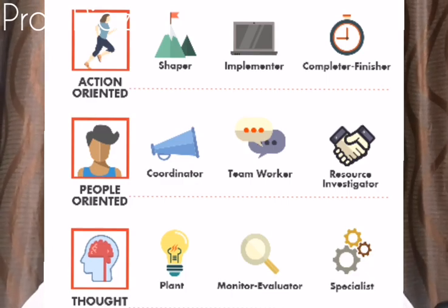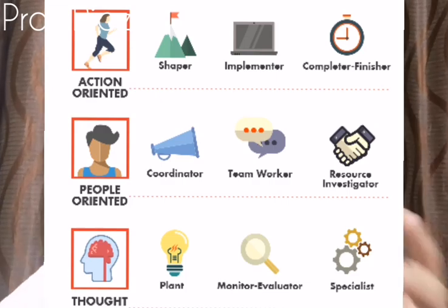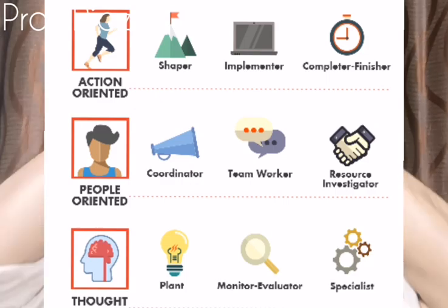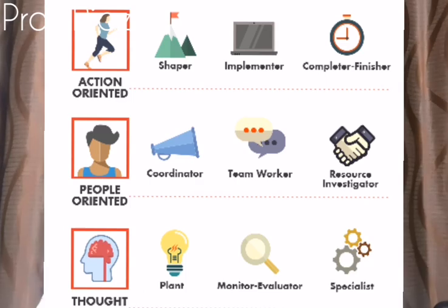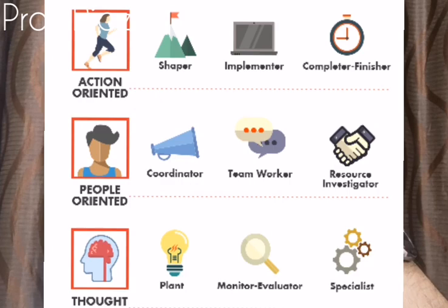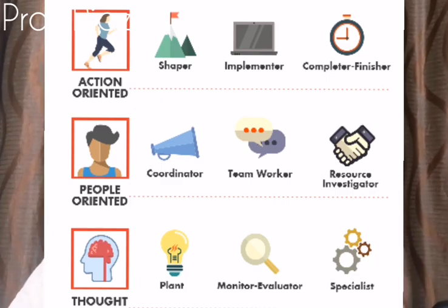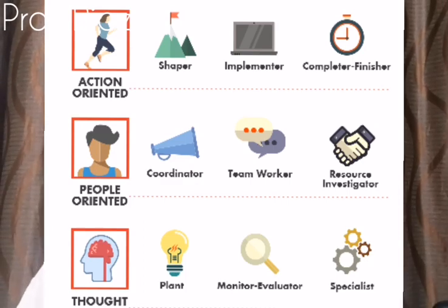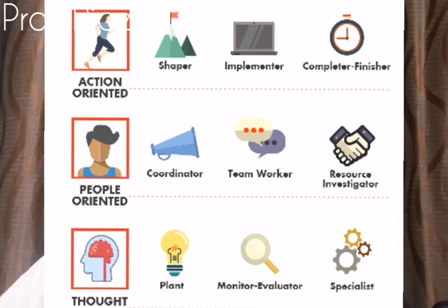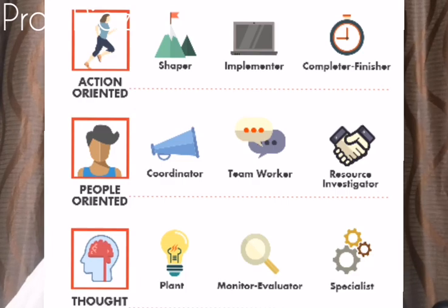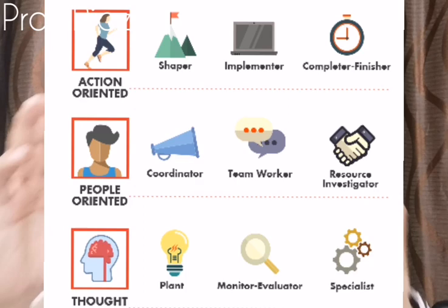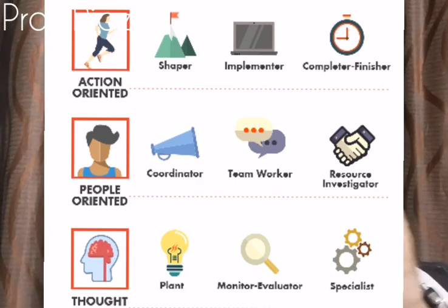Under thinking roles there are three roles. The first is the Plant — not a physical plant, but an idea-generating role. Plants come up with a lot of ideas and creative thinking. The second is the Specialist — they bring a lot of technical knowledge and technicalities to the team, knowing specifications and technical details.